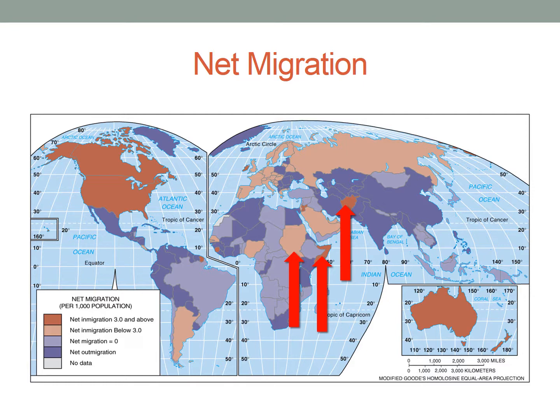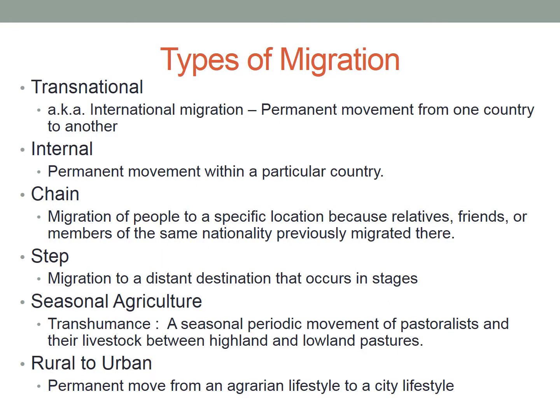Let's look at some other types of migration. Keep in mind that migration has to be long-term — permanent or relatively permanent — and outside of the community of origin. We start with transnational migration, also known as international migration. 'Trans' means crossing something — like the transcontinental railroad crossed the continent. So transnational or international migration is a permanent movement from one country to another.